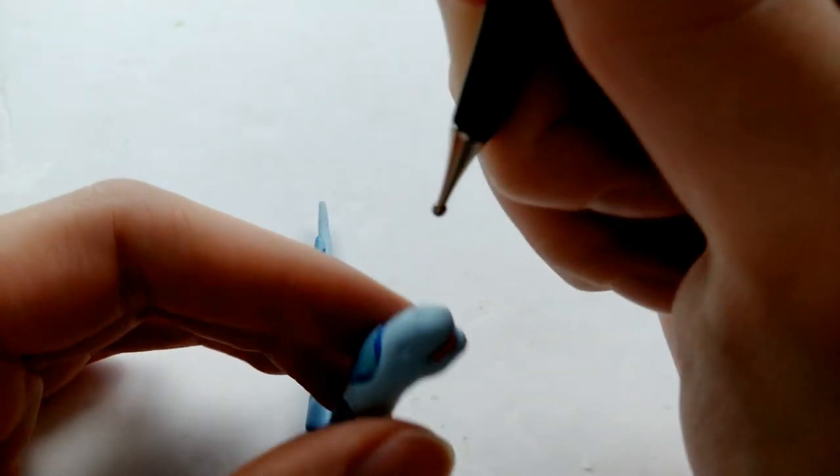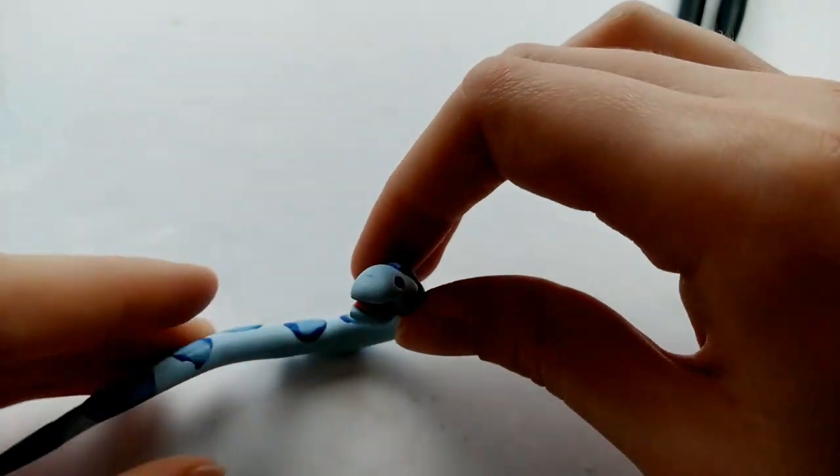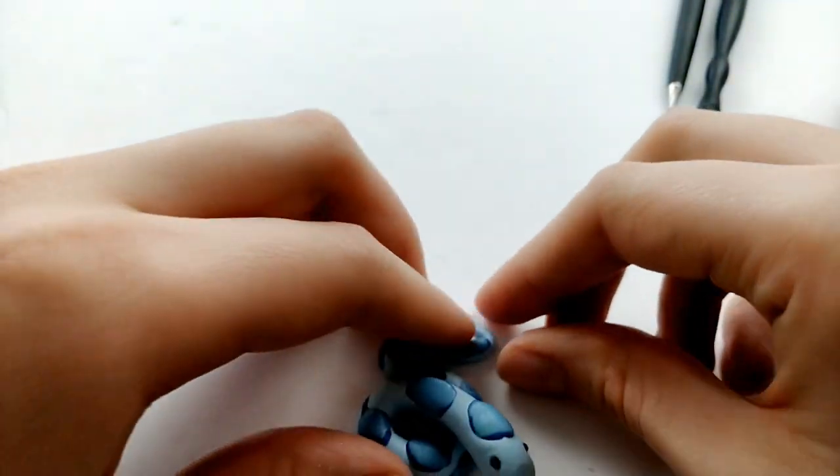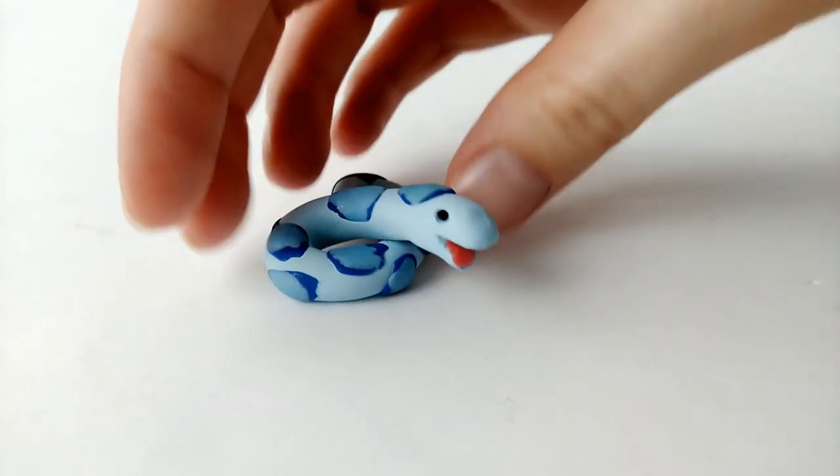Not the tongue, the clay. Then just add some black clay for the eyes and now we're going to contort our snake into whatever position we want. I went nice and curvy. And once you're happy with it, it is time for baking. And this is what the snake looks like after being baked.